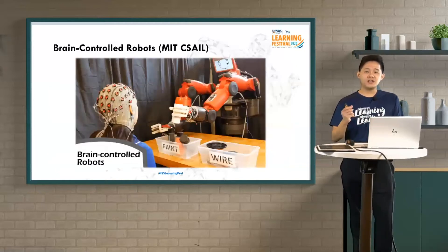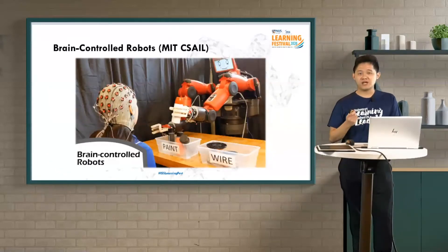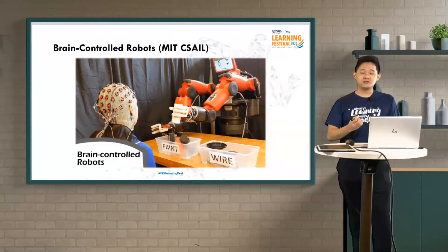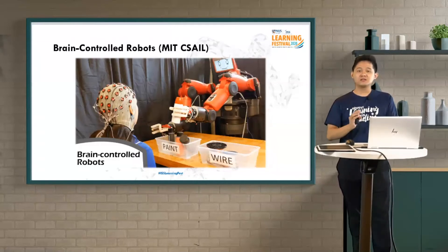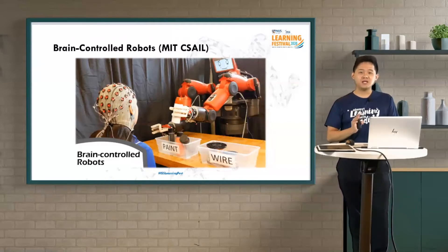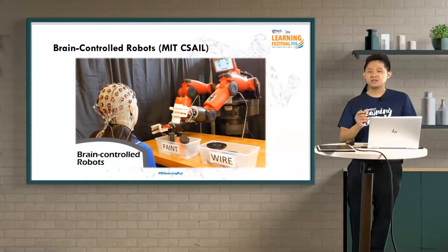Another interesting state-of-the-art application is brain-controlled robots. The very gist of this idea is to use just your brain and nothing else — no coding, no typing of commands — just using your brain to control the robot's movements. This is the main gist of this idea, and it has been illustrated by MIT.